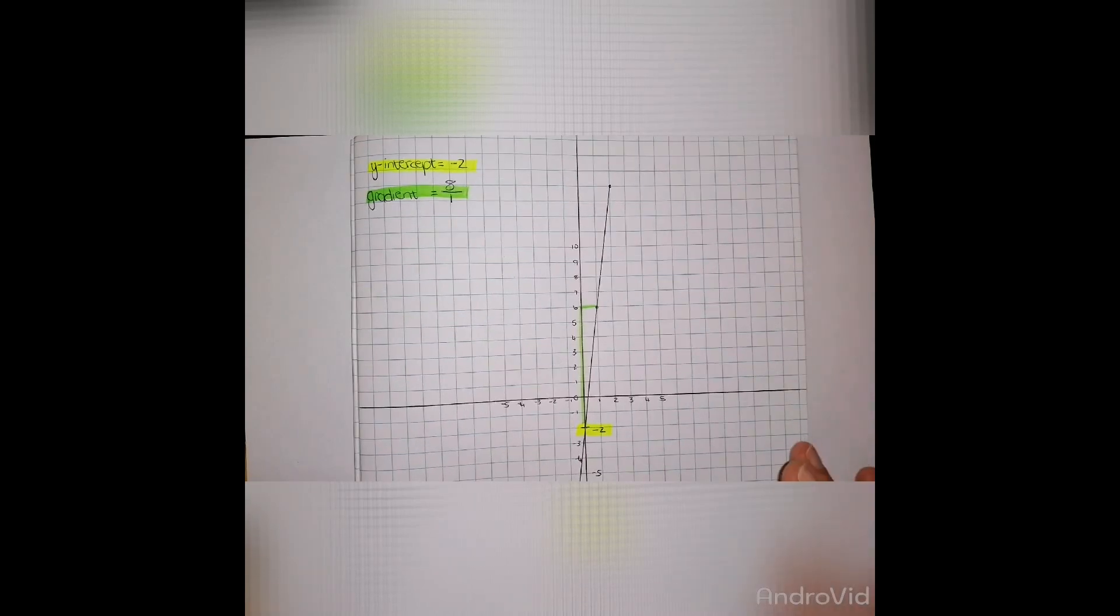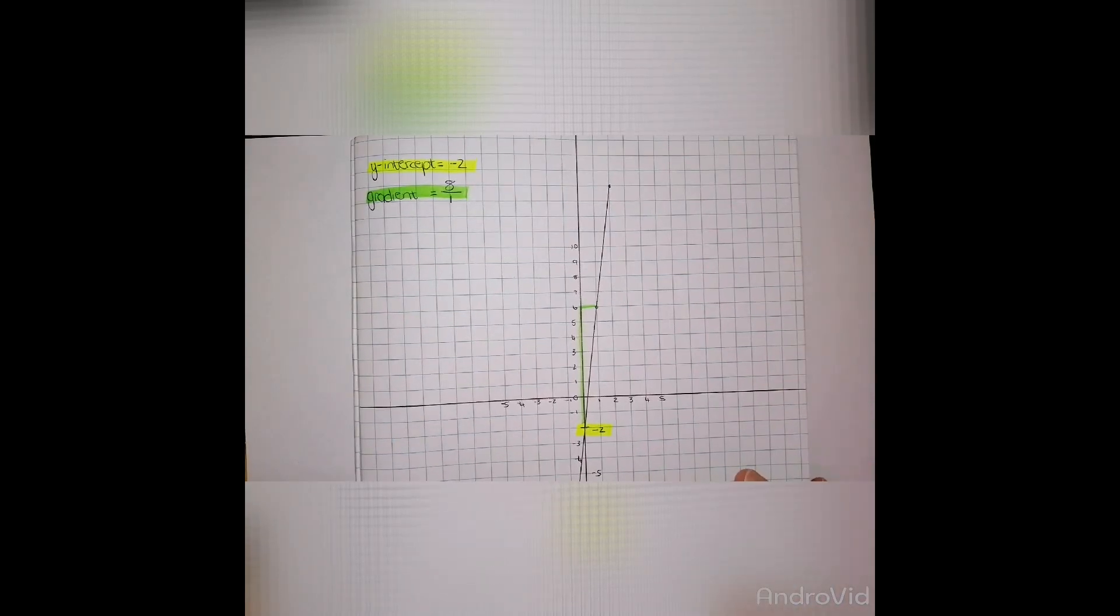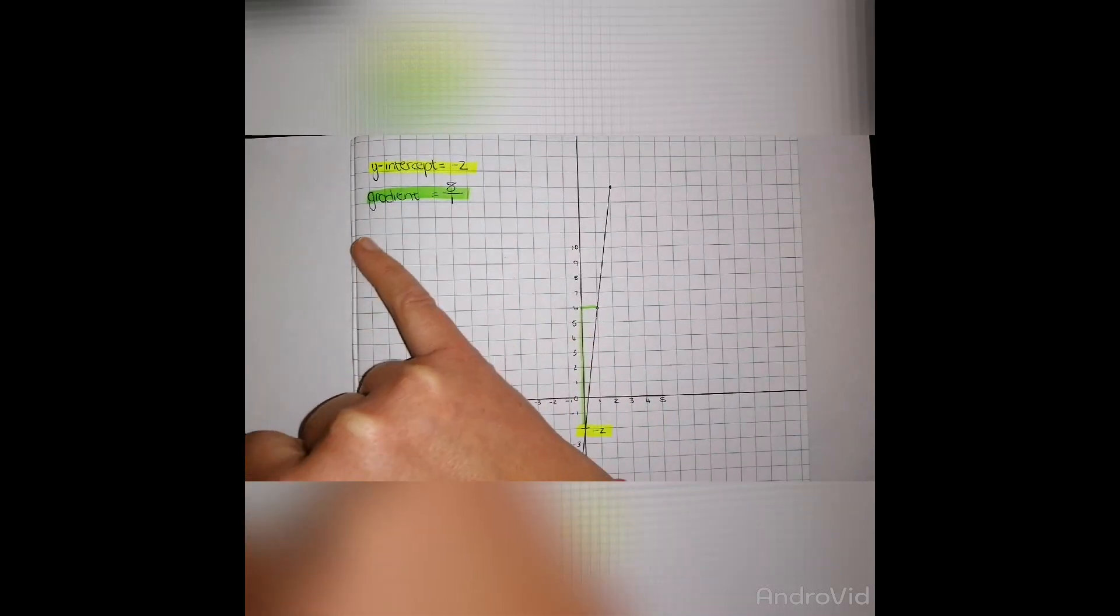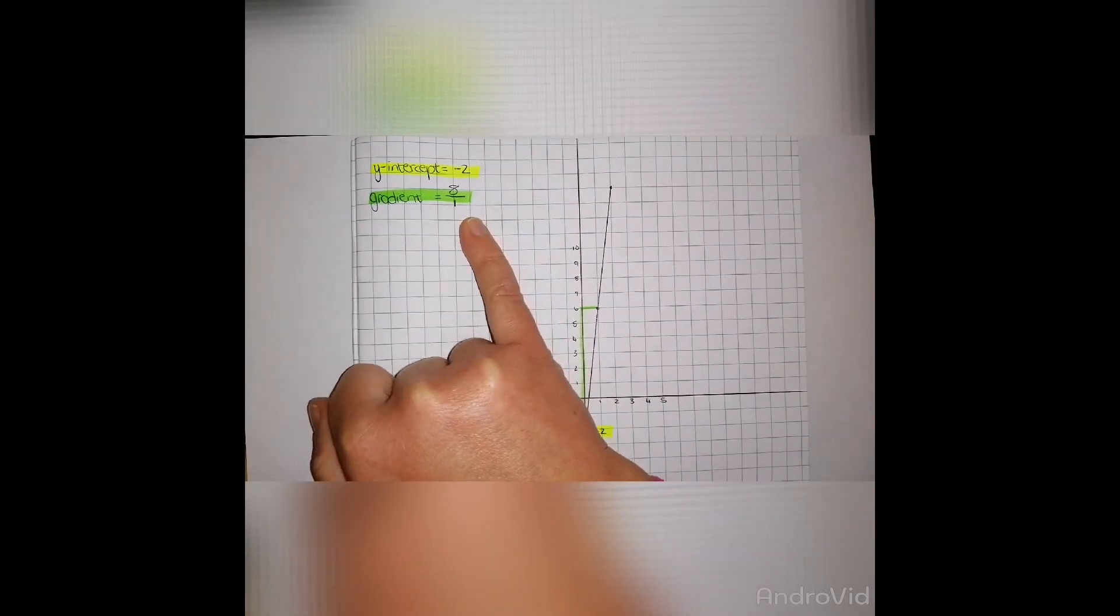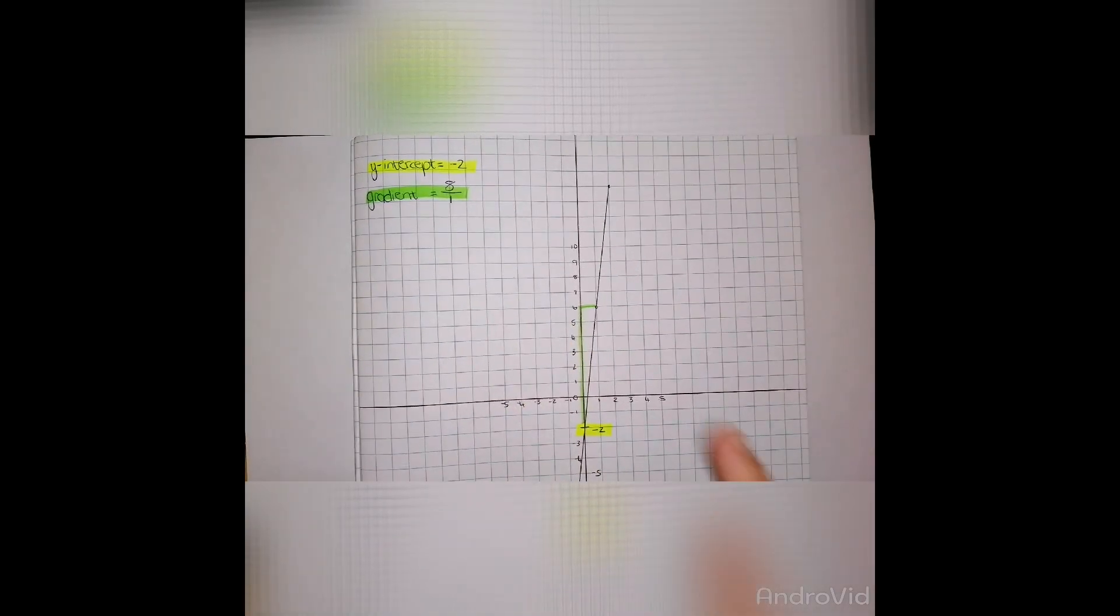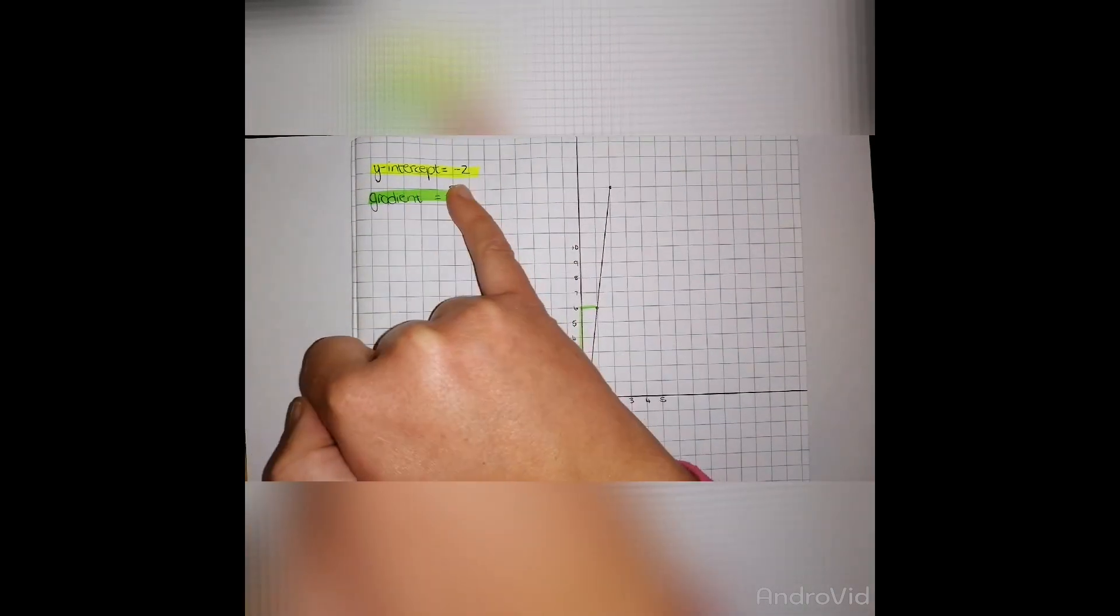Looking at the information that we've worked out using our linear pattern, we have identified that the y-intercept is equal to negative 2 and the gradient is equal to 8 over 1, which is rise over run. So the first thing we need to do is plot my y-intercept.